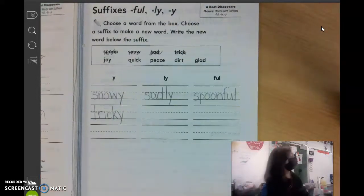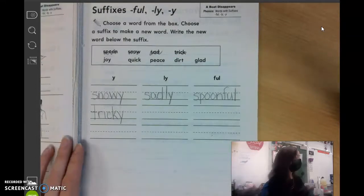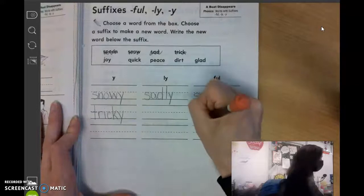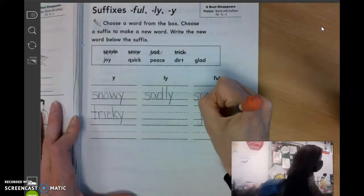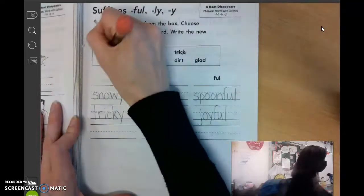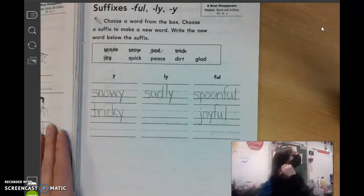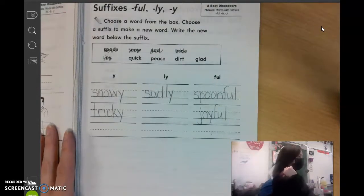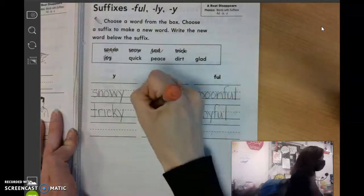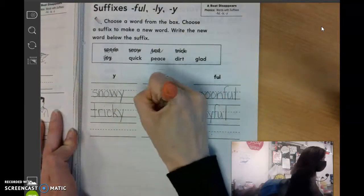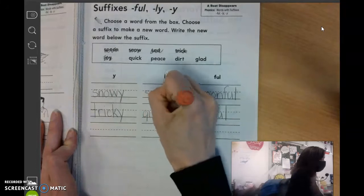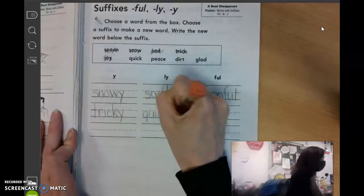What about joy? Christian K? Joyful. We're going to write it over here. J-O-Y-F-U-L. What about quick? Howlong? L-Y, I'm like your bonus word. Q-U-I-C-K-L-Y. Good for you.